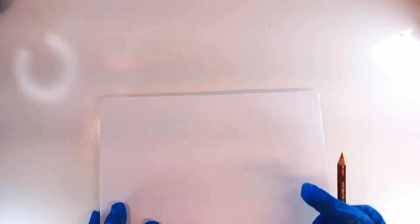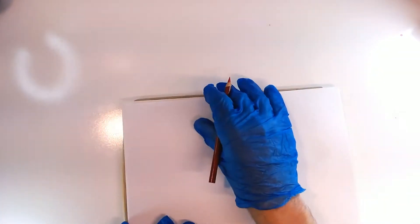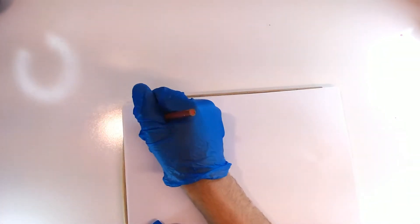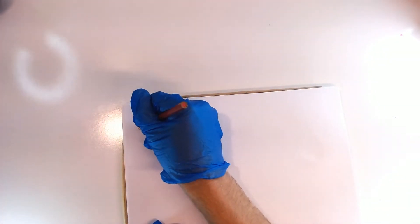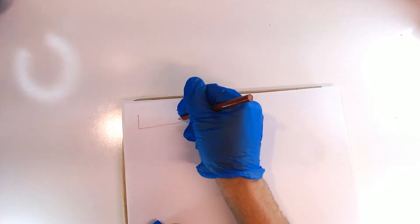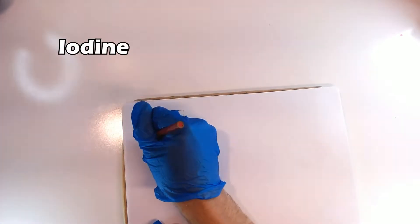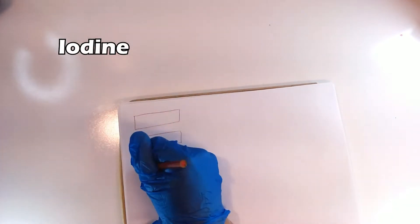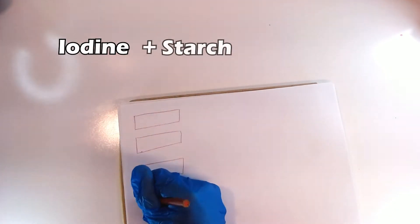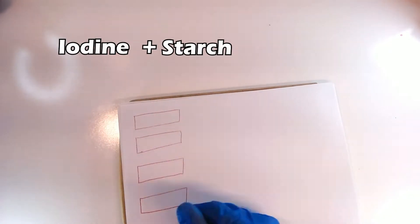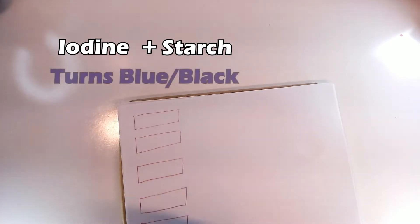We're also going to need a way to detect whether or not starch molecules have been broken down or whether they've been left alone. Fortunately, iodine — like you can get from the pharmacy — reacts with starch. It turns bluish black on contact.